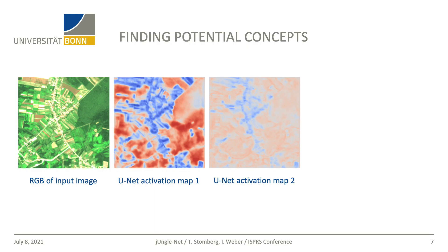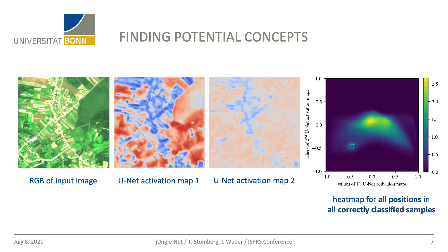What you see here is an input image shown with its red-green-blue channels, and you also see both UNet activation maps, where blue means negative and red means positive. As you can see, there are many structures you can find in both the input image and the activation maps, but there are also a lot of differences. To interpret these activation maps, we transform them to a two-dimensional heatmap.